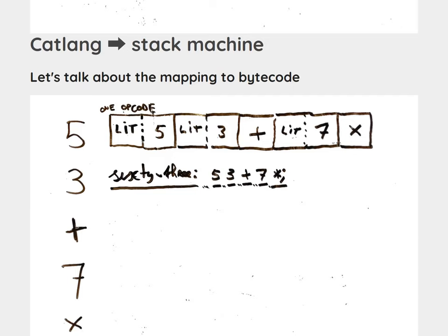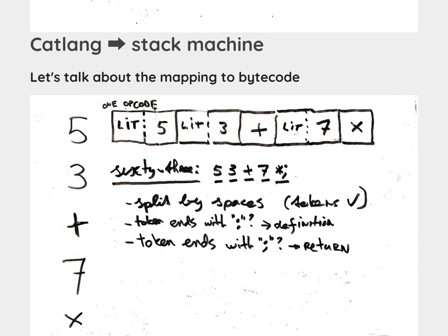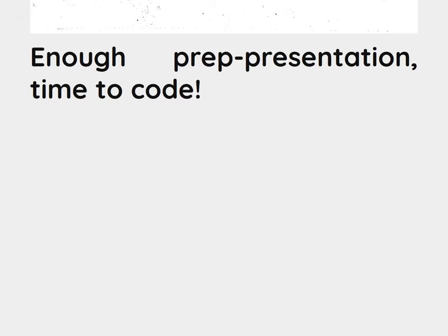What also makes parsing much easier is that you don't need to think about grammars or syntax — you can just separate tokens by spaces. Because you just read your whole language left to right, you don't need to do anything fancy. You just say, I separate all my words by whitespace, and those words are then interpreted. You split by spaces, and because of my little syntax thing, if a token ends with a colon, it's a definition. If it ends with a semicolon, it's a return. Alright, that's enough prep presentation. I have 30 minutes to implement this.